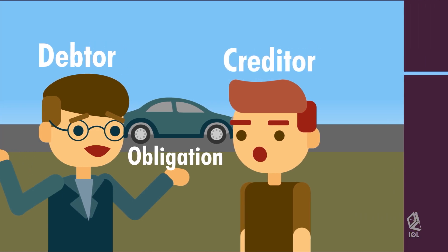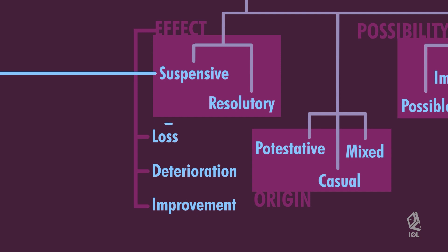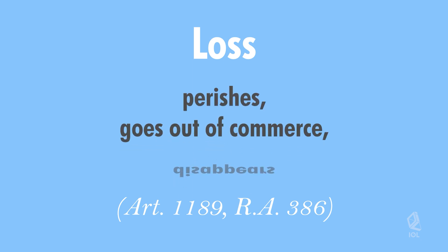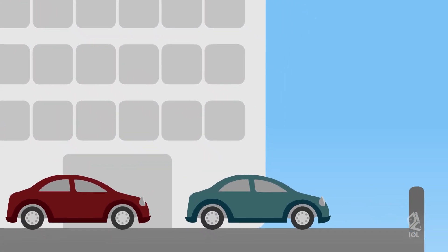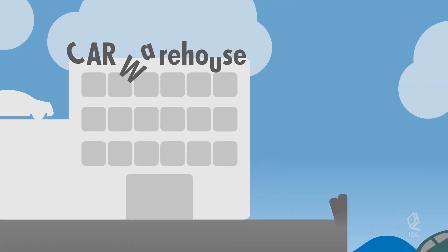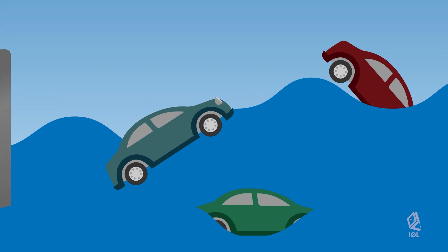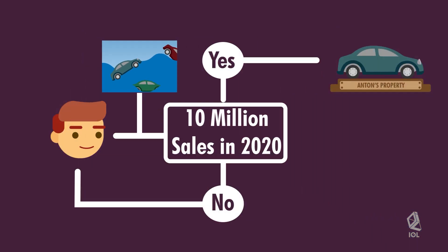What if, before the fulfillment of the condition, the car was lost? There is a loss of the thing when it perishes, goes out of commerce, or disappears in such a way that its existence is unknown or cannot be recovered. For instance, before delivery, a tsunami engulfs the city, sweeping off all the objects therein, including the car which Antin promised to deliver to Henry. If the car perishes before the happening of the condition — which is to achieve 10 million pesos in sales for 2020 — without the debtor Antin's fault, then the obligation is extinguished.